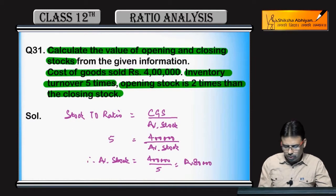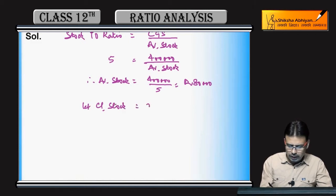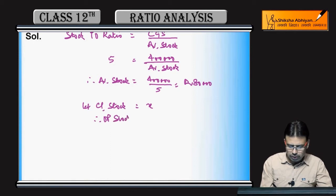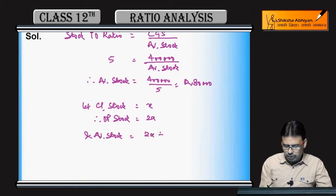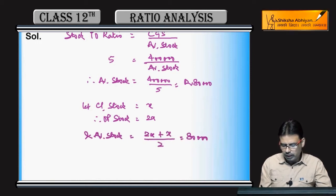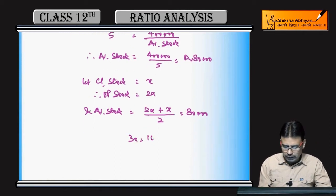Now we need to find opening and closing stock. Let closing stock be x, therefore opening stock is 2x. Average stock equals opening stock plus closing stock divided by 2. We already found average stock is 80,000, so solving: 3x equals 1,60,000.